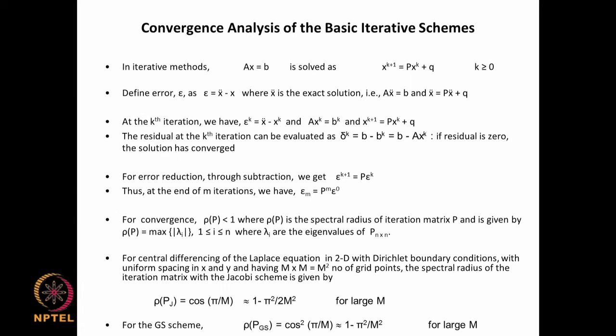We need to do a proper convergence analysis. In part 2 we look at how we can establish conditions under which these iterative methods are convergent, then we look at the asymptotic rate of convergence and characterize iterative methods by this rate. We also show that certain methods are better than these basic methods in terms of convergence rate.